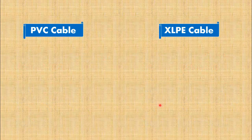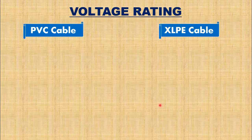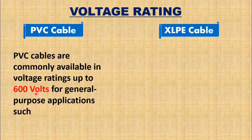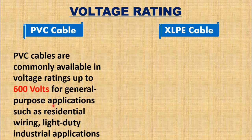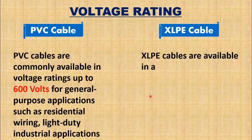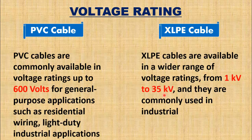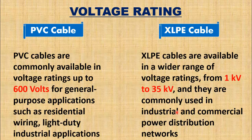Another difference is based on voltage rating. PVC cables are commonly available in voltage ratings up to 600 volts, and are used for general-purpose applications such as residential wiring and light-duty industrial applications. XLPE cables are available in a wider range of voltage ratings, from 1 kV to 35 kV and above, and are commonly used in industrial and commercial power distribution networks.